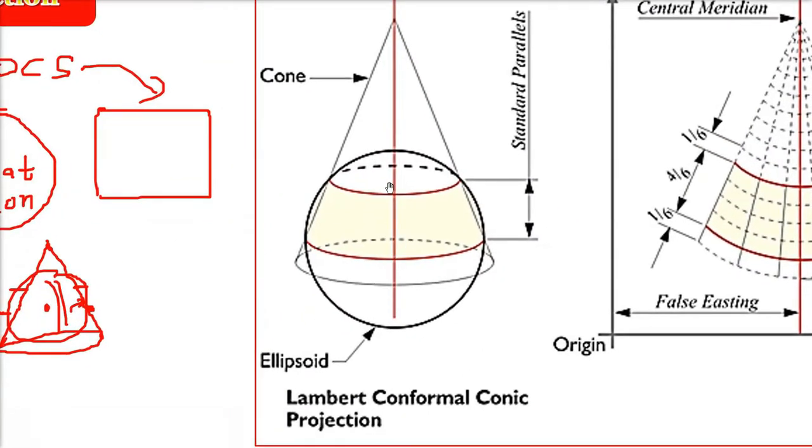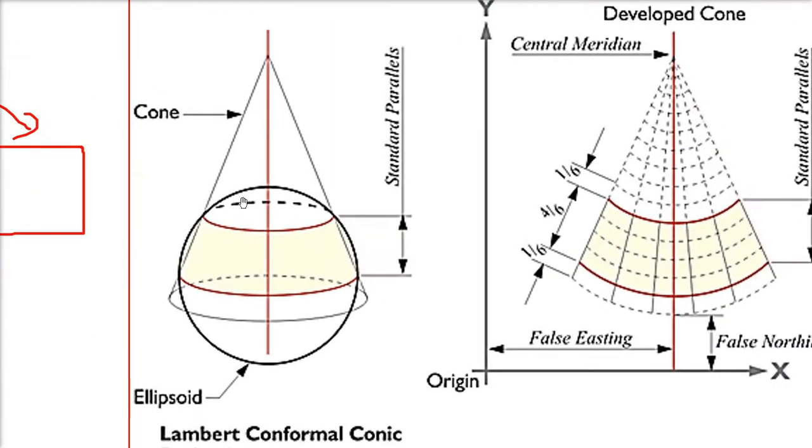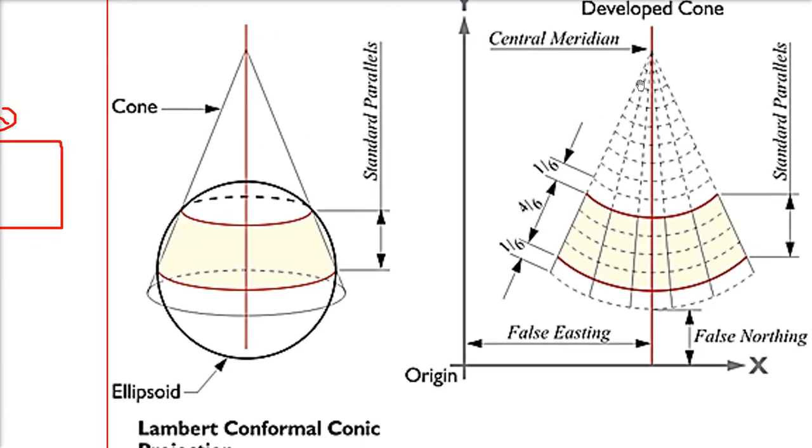Here you have Lambert Conformal Conic and it is touching the earth at two parallels. Parallels are the lines which are parallel to your equator or equatorial plane. This is the two parallels you are getting and this is the developable surface. You just assume that it is a cone, one part you cut and you open it.